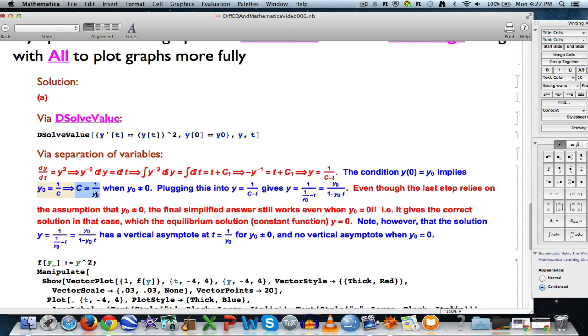to get the c value here for this general solution to be 1 over the initial condition, 1 over y0, as long as you don't divide by 0. If you simplify that thing, it simplifies to this, and that expression, actually, sort of like magic, works even if y0, the initial value, is 0. It gives you the constant function, the equilibrium solution, y always equals 0.